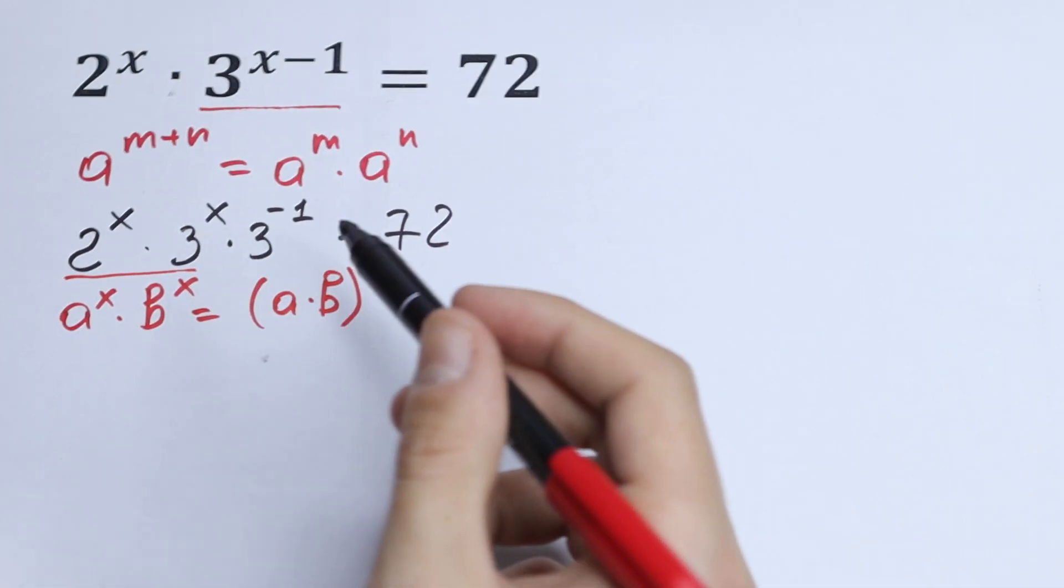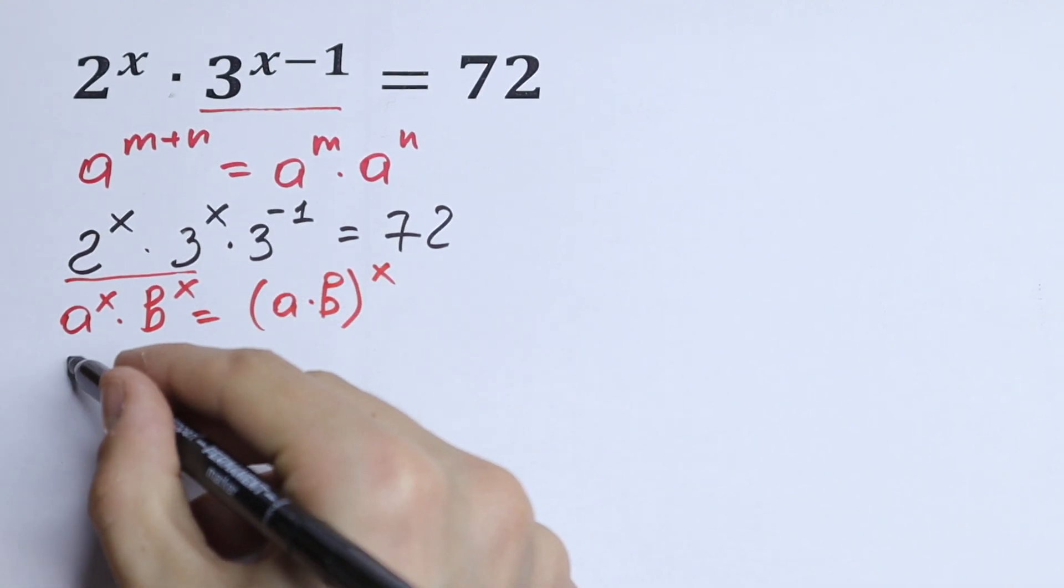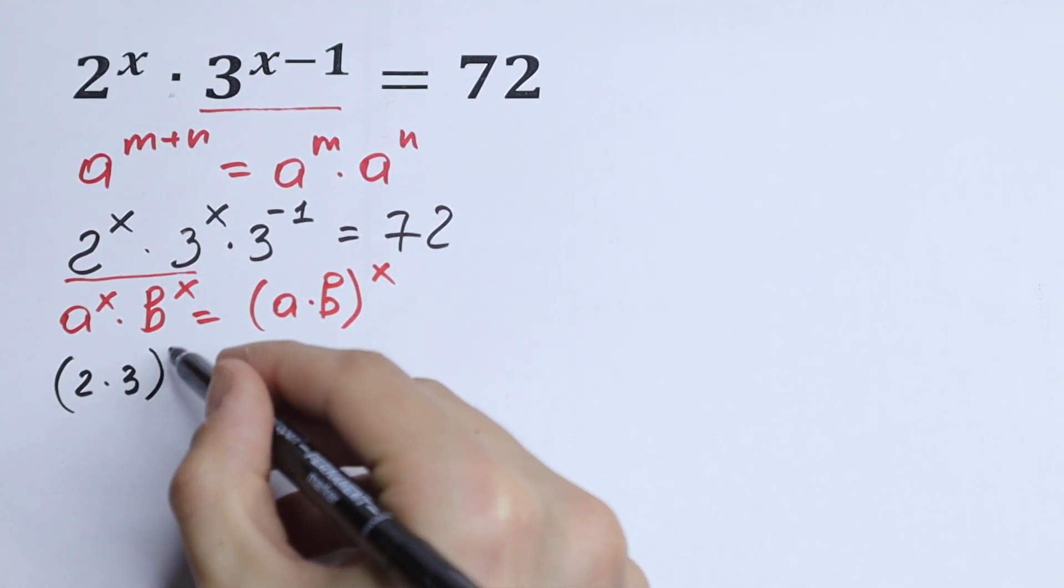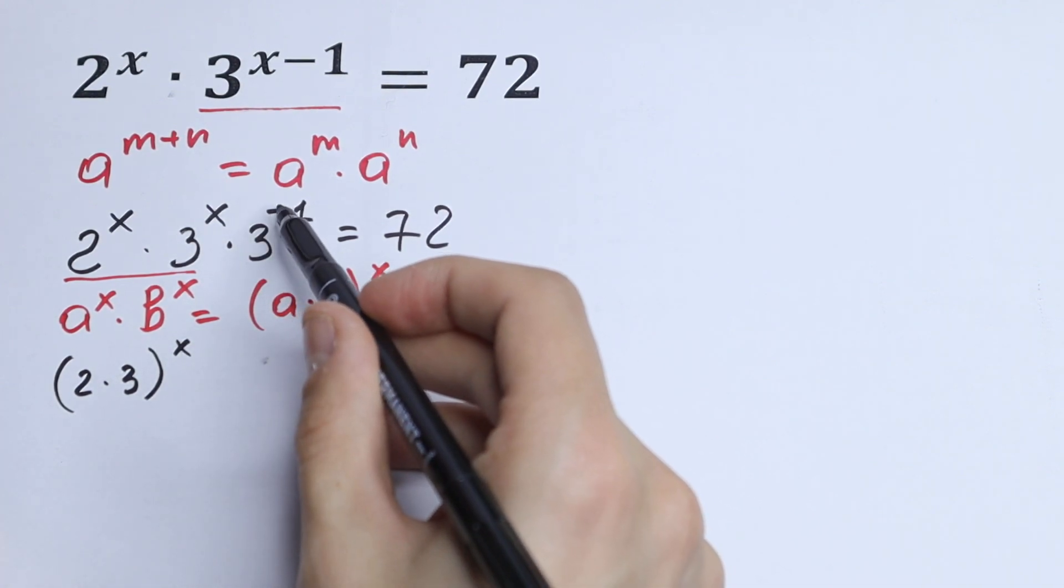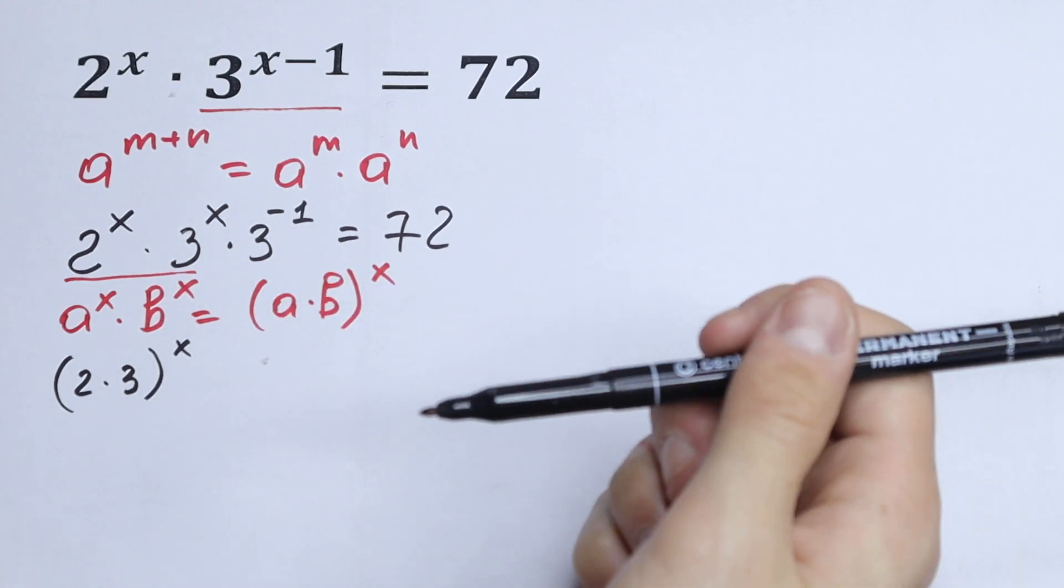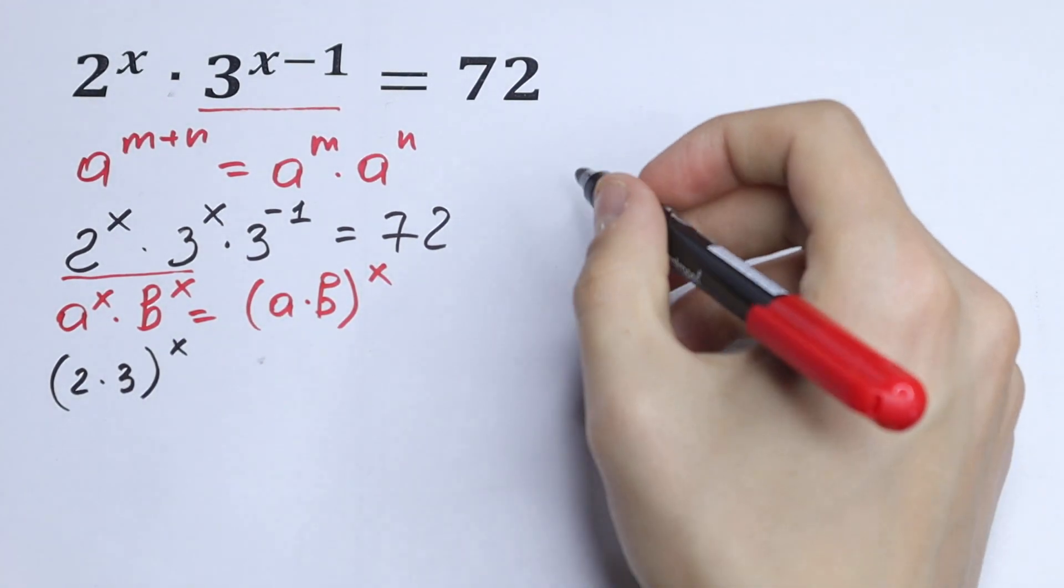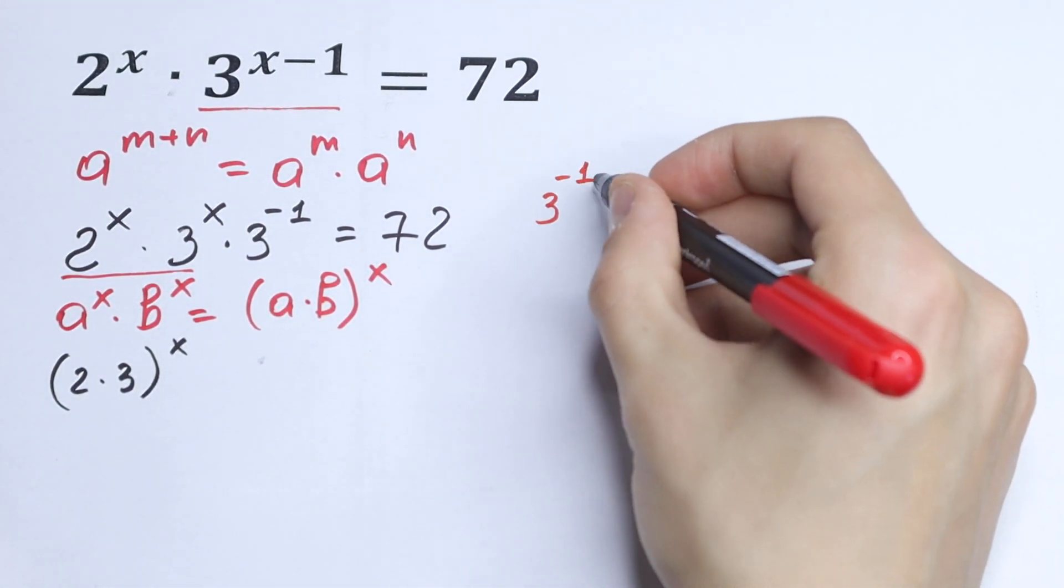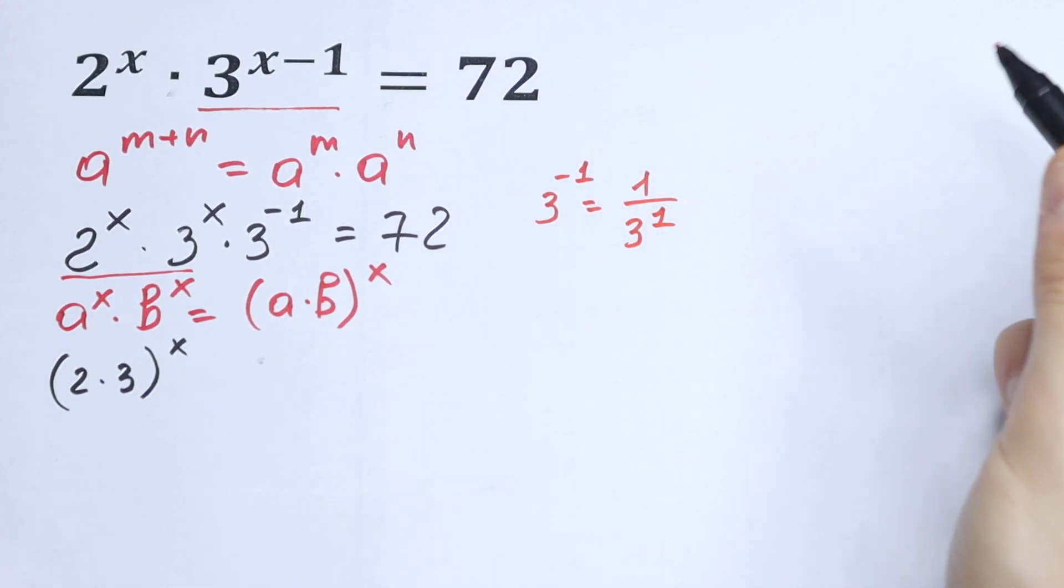Write this using this rule. Then we will have 2 times 3 to the power x, and you know if we have a negative exponent, we can write it with the plus sign but in the denominator. So if we have, for example, 3 to the minus 1 power, we can write it as 1 over 3 to the first power.